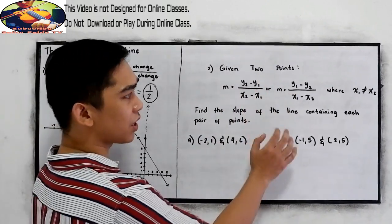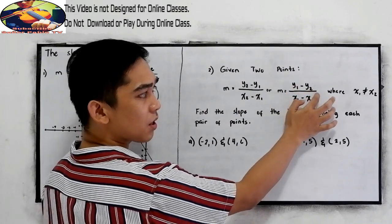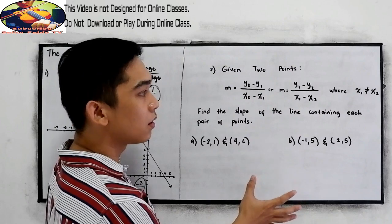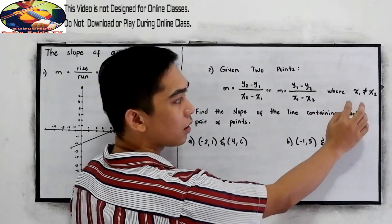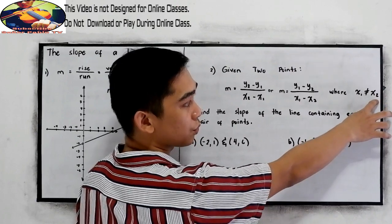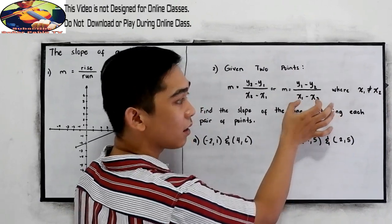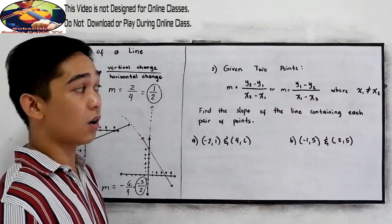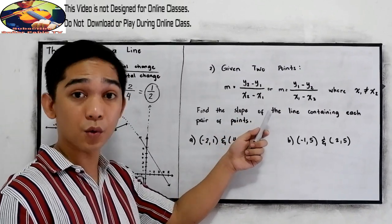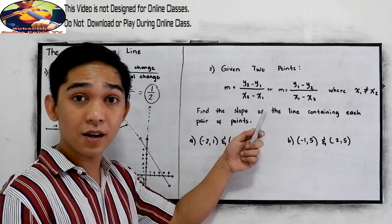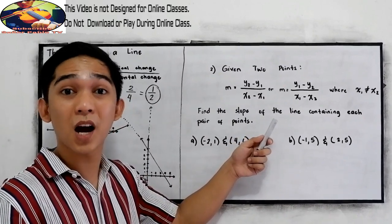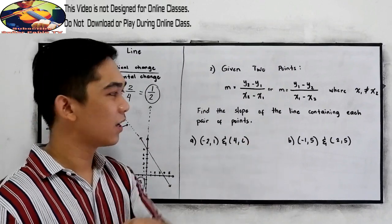Or it can be interchanged: y sub 1 minus y sub 2 all over x sub 1 minus x sub 2. Our condition, x sub 1 must not be equal to x sub 2. Why? Because if x sub 1 and x sub 2 are equal, that will give us undefined because our denominator will become 0.